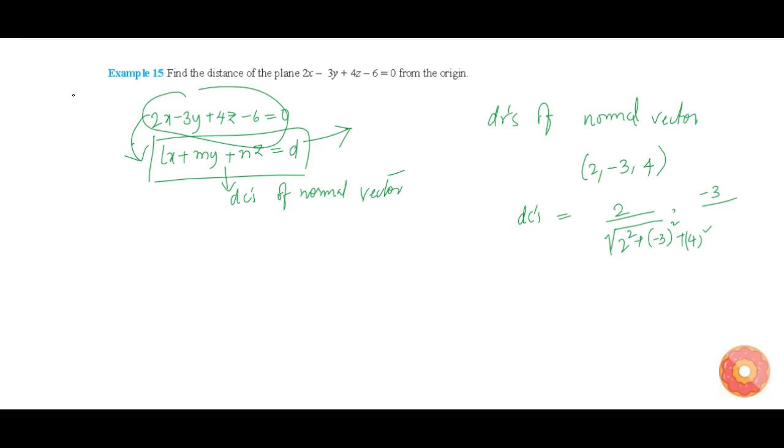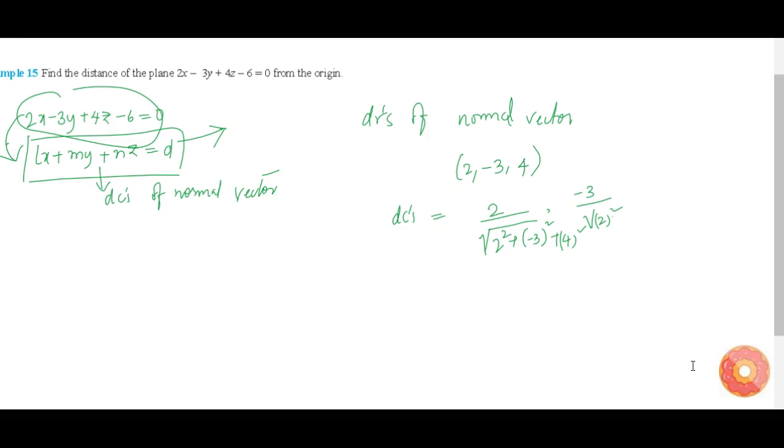minus 3 by under root of 2 square plus minus 3 square plus 4 square, and 4 by under root of 2 square plus 4 square.